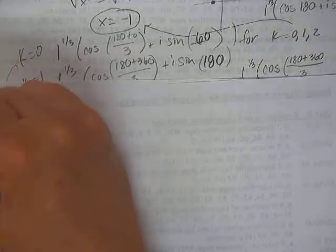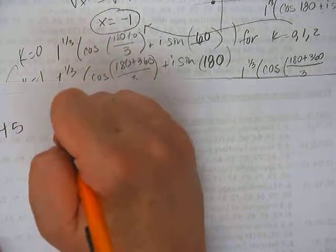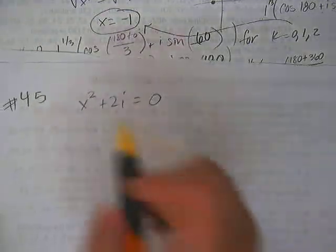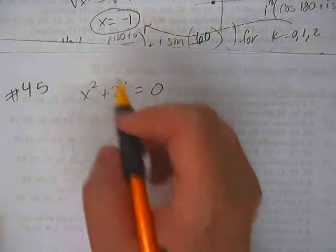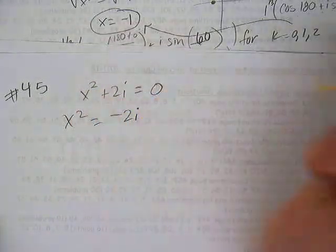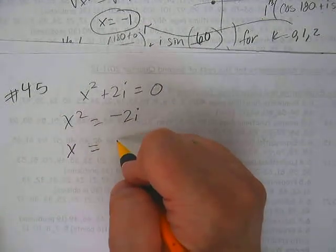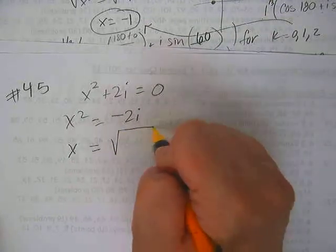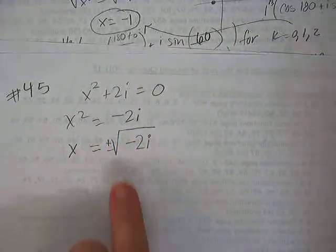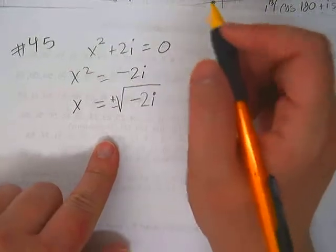It's the same thing, right? I'll get you started. Number 45 is x squared plus 2i equals 0. So to solve this, we could go x squared equals negative 2i. So then we square root both sides. So x is the square root of negative 2i.